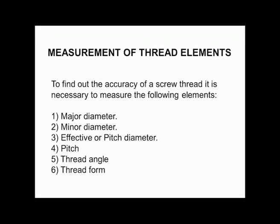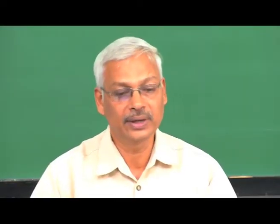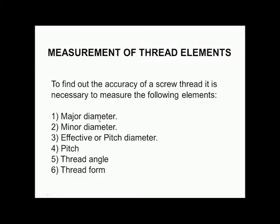Now let us move to the measurement of thread elements. In order to find the accuracy of a screw thread produced, it is necessary to measure the various thread elements, thereby determining whether the thread is as per specification. The elements measured are: major diameter, minor diameter, pitch diameter or effective diameter, pitch, thread angle, and thread form.